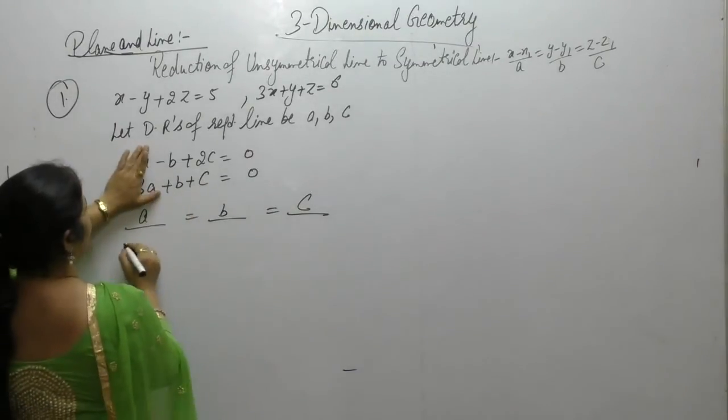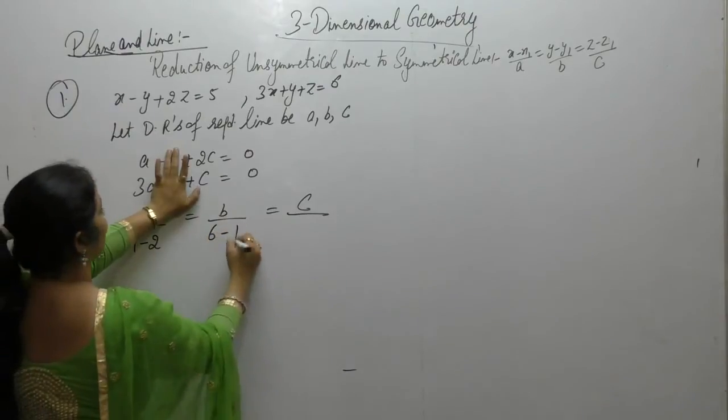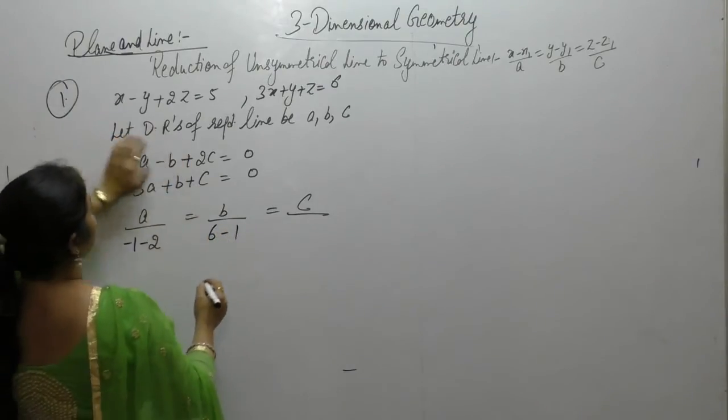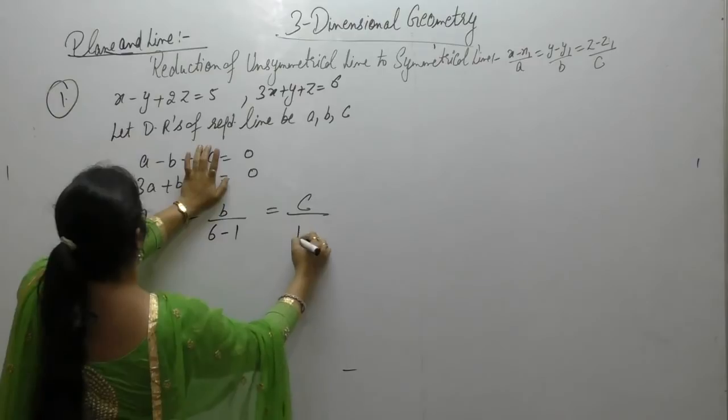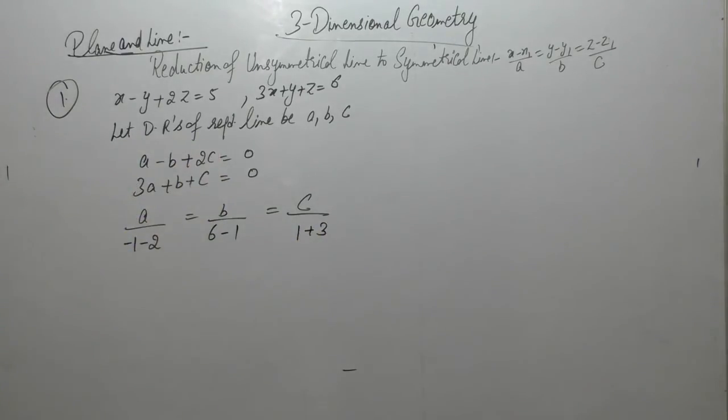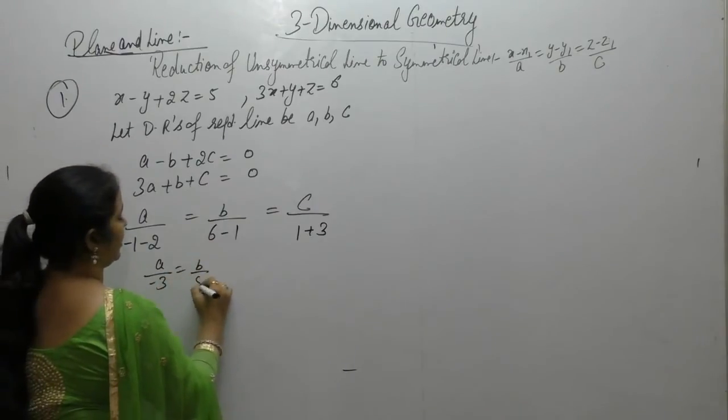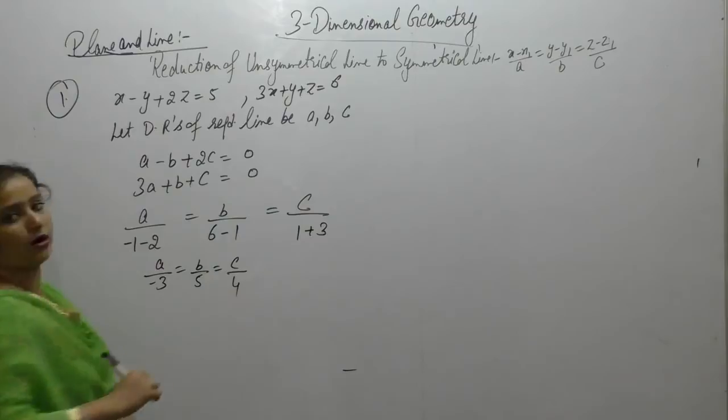A is minus 1 minus 2, B is 6 minus 1 and C is 1 minus minus plus 3. So, we get A upon minus 3, B upon 5 and C upon 4.